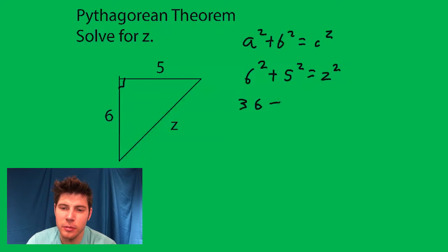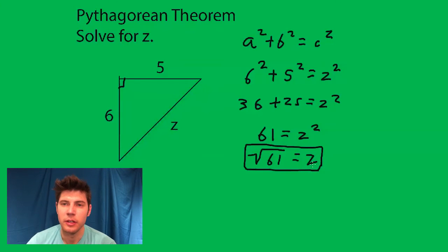This is 36 plus 25 equals z squared, and 36 plus 25 is 61. And you'd say square root of 61 equals z, and that's the answer.